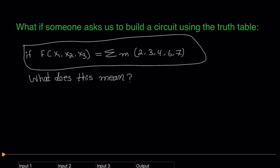We will later talk about the Karnaugh map, or K-map, which will also help us simplify logic circuits. When someone asks you to build a circuit using a truth table — like this function of three inputs — the outcome should be the summation of min terms m2, m3, m4, m6, and m7, meaning those min terms will produce a high output, logically true.